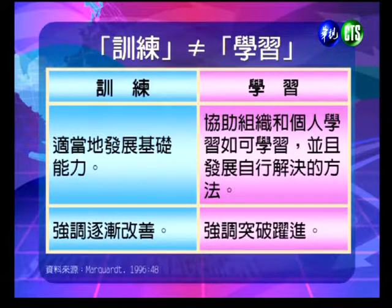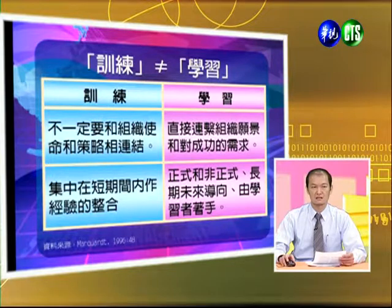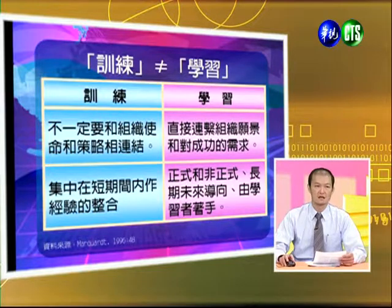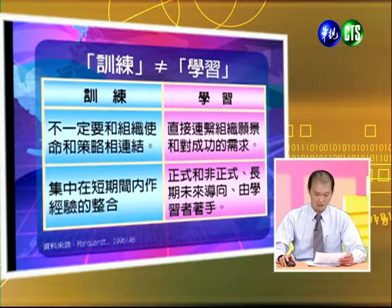訓練集中在技術能力和工作績效的達成；學習比較重視價值觀、工作態度以及創新和產出的結果。訓練是適當地發展職能工作績效的基礎；學習是協助組織和個人學習如何進行學習，並發展比較好的自行解決方案。訓練強調逐漸改善；學習比較傾向突破式、跳躍式的改變。訓練不一定要跟組織的使命和策略做連結，但學習應該要直接聯繫到整個組織的願景和成功需求。訓練集中在短期內合作經驗的整合，但學習是正式和非正式的長期、未來導向。